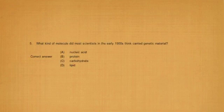Moving on to our last question, which kind of molecule did most scientists in early 1900s think carried genetic material? So before the discovery that Avery and other scientists made, Watson and Crick, they actually discovered the structure of DNA.